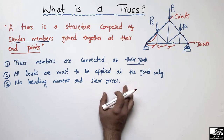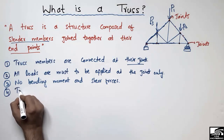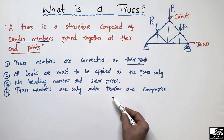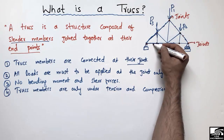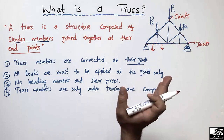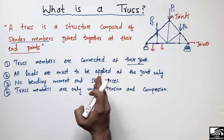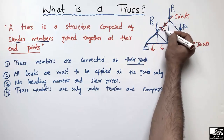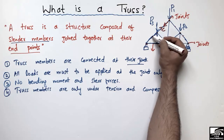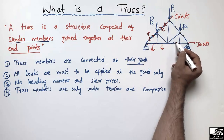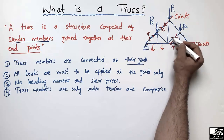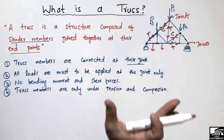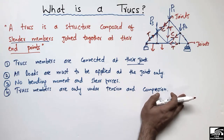The fourth important point states that truss members are only under tension and compression. These members are not subjected to any bending or shear forces. For example, due to load P1 a member may be under compression (C), and due to load P3 a member may be under tension (T). The truss members are only subjected to tension and compression.